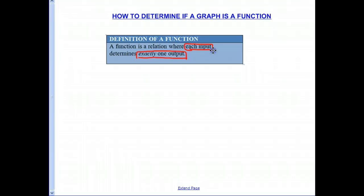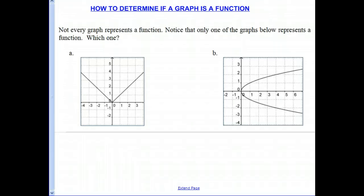So let's look at some graphs. Notice that we have two graphs and one of these is not a function. The question is which one. So we want to see if it fits in with the definition of a function, where for exactly one input is exactly one output.